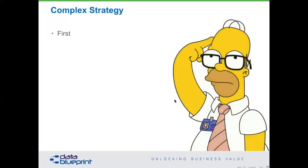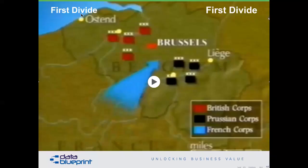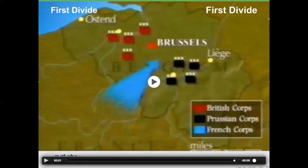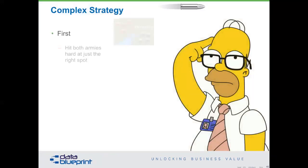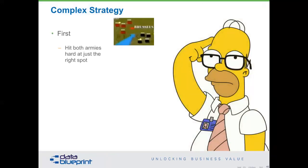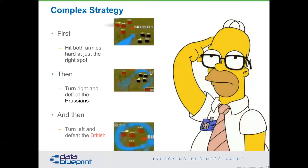Let's divide. The key with divide is that you take your forces and mass them very strongly at one particular point and hit really hard. Then you conquer — and the conquer has to be sequential. First, we're going to turn to the right and defeat the Prussians, and then we're going to turn to the left. The strategy: hit both armies really hard at just the right spot — if I'm too far left or too far right, my strategy of dividing them will not work. Second component: turn to the right and defeat the Prussians. If half of us turn right and half turn left, we will not survive. Then, when we've defeated the Prussians, turn to the left and defeat the British.